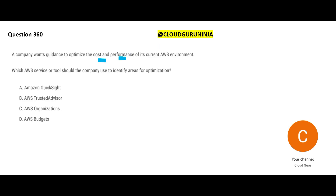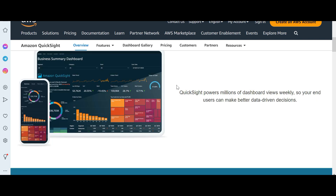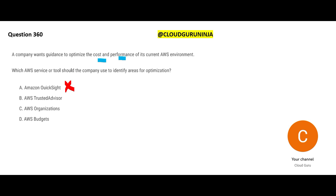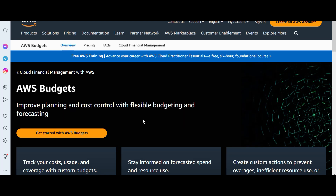Now, a company wants to optimize both cost and performance. Which service should they use? QuickSight is a reporting tool for dashboards — it won't help with cost optimization. Budgets won't help with performance optimization — budgets are about cost, like setting a monthly spending limit for utilities, food, and movies. But this question is about both cost and performance, so Budgets is wrong.